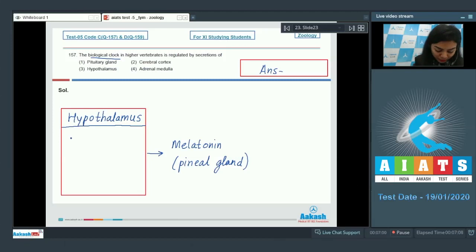In hypothalamus, a nucleus is present termed as suprachiasmatic nucleus and in this nucleus, a rhythm generating system is present which in turn regulates the secretion of melatonin from pineal gland. So the correct answer here would be option number three, hypothalamus. Pituitary gland, cerebral cortex and adrenal medulla have no direct correlation for the secretion of melatonin. The correct answer is option number three.